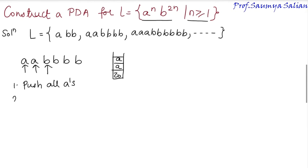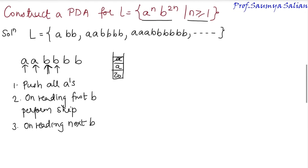Now when I read this B, that is on reading first B or if I encounter the first B, perform skip operation. That is on reading this B, perform skip operation. On reading the next B, pop this A out. That is on reading next B, pop an A. For these two B's, I have found a match of an A.